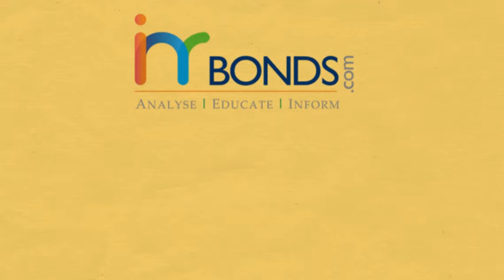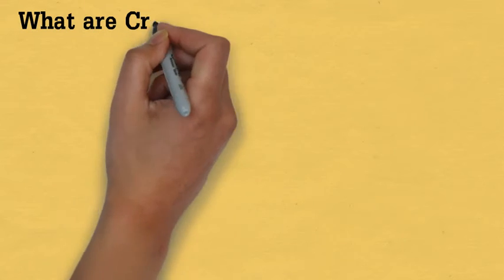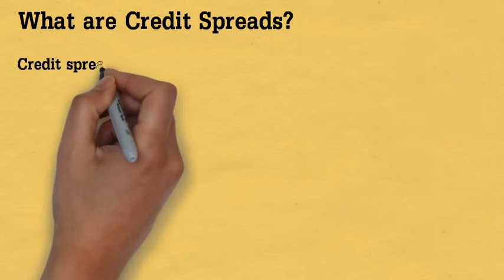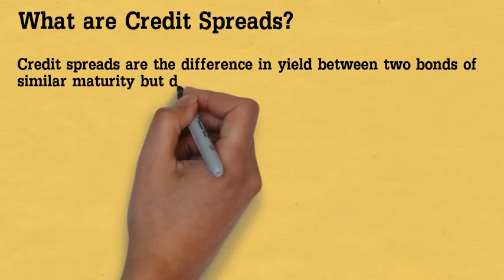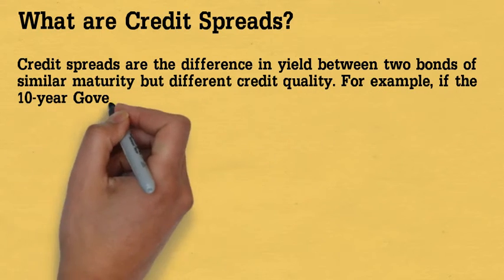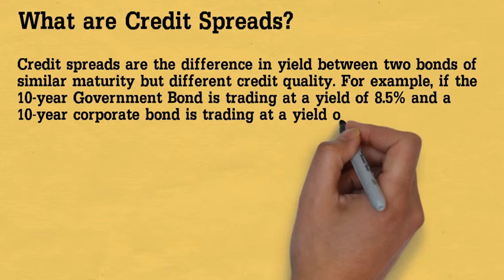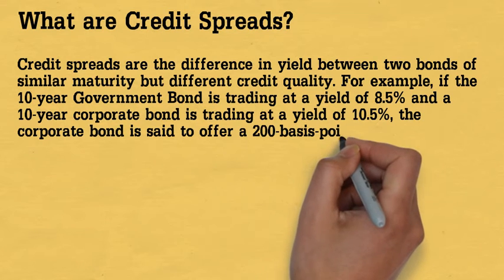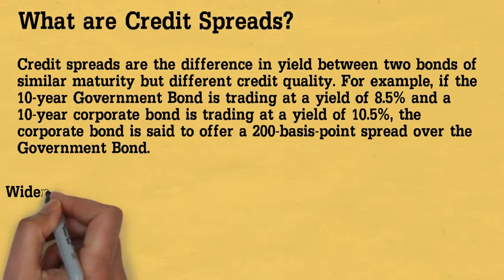Hi! In this week's 2 minute concept video we are going to explain credit spreads and how they change. Credit spreads are the difference in yield between two bonds of similar maturity but different credit quality. For example, if a 10 year government bond is trading at a yield of 8.5% and a 10 year corporate bond is trading at a yield of 10.5%.